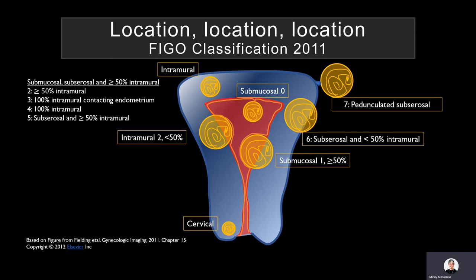There is a FIGO classification from 2011 which shows examples of the different locations by number. While you don't have to memorize these, the basic concept is that fibroids can have a partial or complete location with respect to the endometrium. If completely within the endometrium, they're called intracavitary — category zero. Others that impinge upon and distort the endometrium can be described by how much of the fibroid is involved. The vast majority are significantly intramural, some have a partially subserosal component, and some are highly pedunculated, coming off by a small stalk. Rarely, fibroids can occur in the cervix.